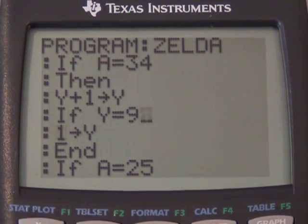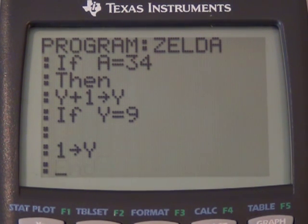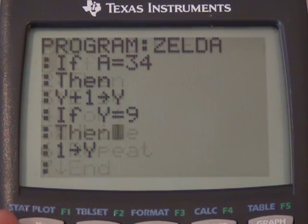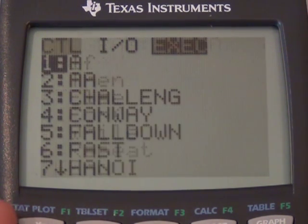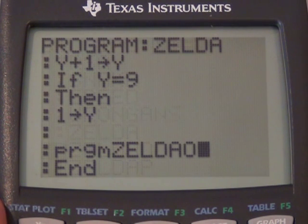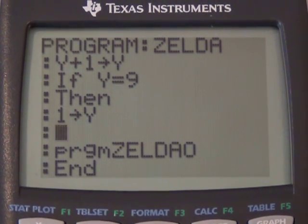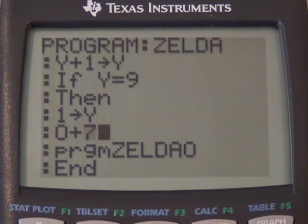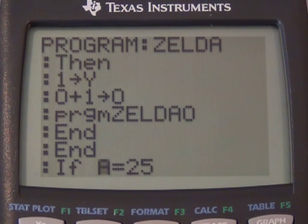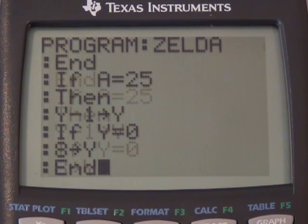If Y equals 9, then one stores Y. So let's put it then here, and end here. Program Zelda O. Okay. So this is if we're moving down, then we need to increment the Y one. O plus one stores O. Okay.